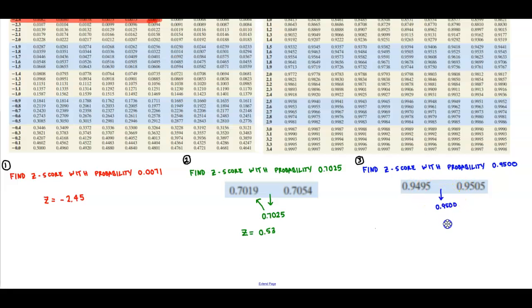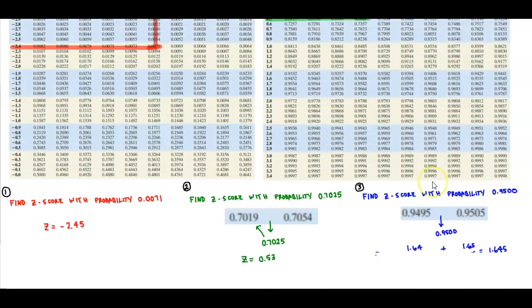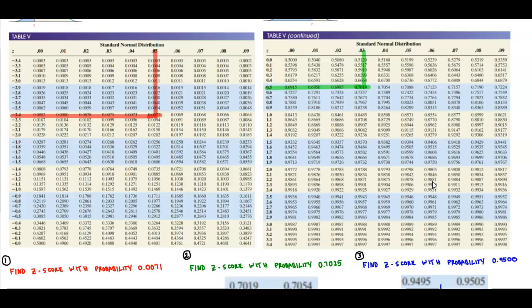Okay, but if you notice here that the difference between the lower one and the higher one is the same. So therefore, in this scenario, what we have to do is we need to look at what is the z-score for 0.9495. Well, for 0.9495, we see that it's 1.64. And then also for 0.9505, it's 1.65.